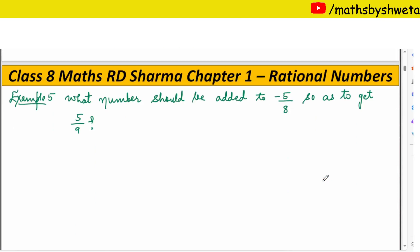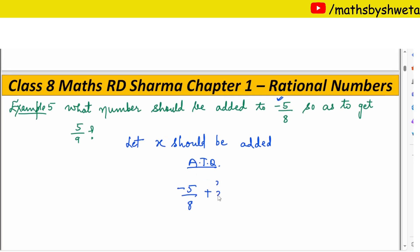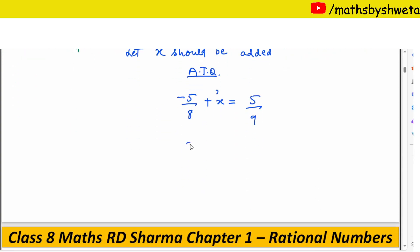Next, example 5, this is the last example. What number should be added to minus 5 upon 8 so as to get 5 upon 9? So again, let x should be added. According to question, this is how to add, so my answer is 5 upon 9.